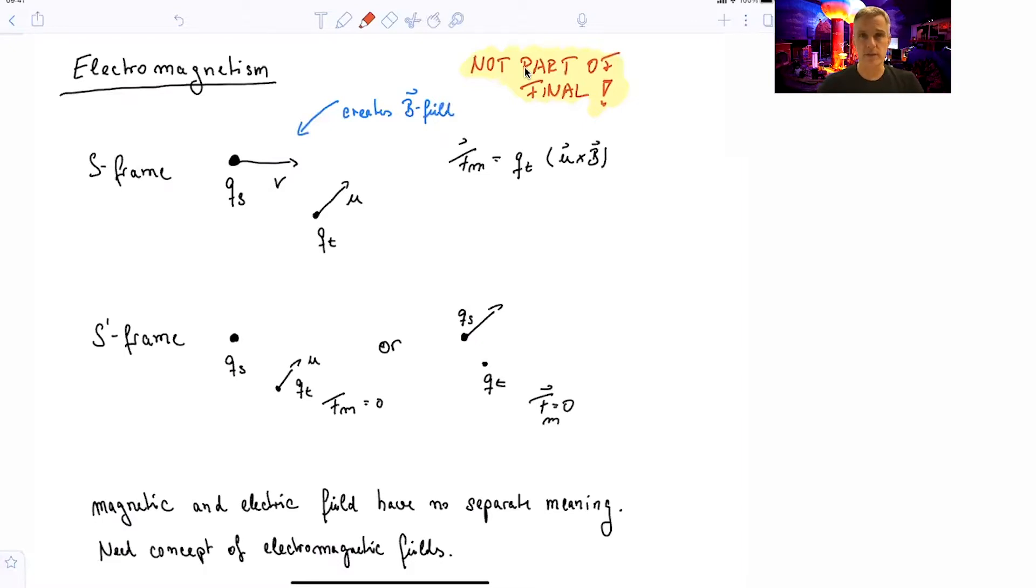But nevertheless, it's interesting to discuss electromagnetic effects in the context of special relativity, as it led to the development of special relativity in the first place. After all, the paper which describes the theory of special relativity is about the electrodynamics of moving bodies.